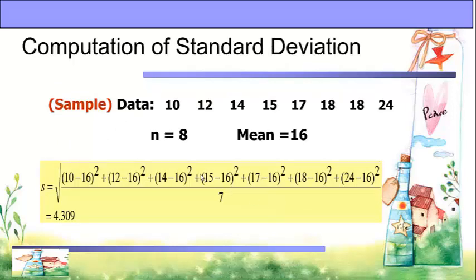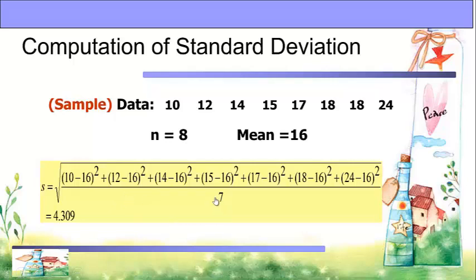This is a sample data set with 8 pieces of data. Adding all the data and dividing by 8, the mean is 16. To get the standard deviation, take the square root of (10 minus 16) squared plus (12 minus 16) squared plus (14 minus 16) squared, continuing until (24 minus 16) squared. The total is divided by n minus 1, which is 8 minus 1 equals 7. Taking the square root of the result gives the standard deviation, which equals 4.309.